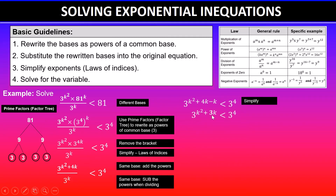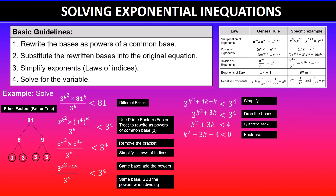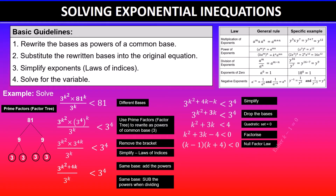Simplifying 4k minus k gives 3k, so we have 3 to the power of k squared plus 3k, less than 3 to the power of 4. We can then drop the bases, giving k squared plus 3k is less than 4. This is a quadratic inequality, so we set it equal to zero by moving 4 over: k squared plus 3k minus 4 is less than 0. Factorizing gives k minus 1 times k plus 4, less than 0. Using the null factor law, either k minus 1 equals 0 or k plus 4 equals 0.